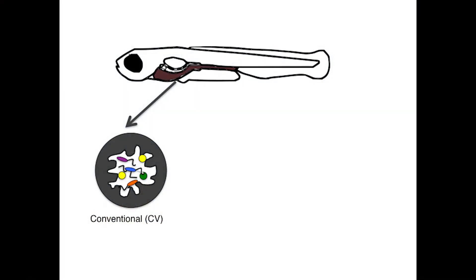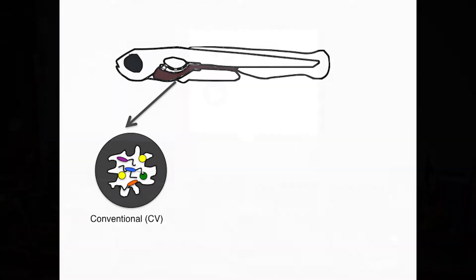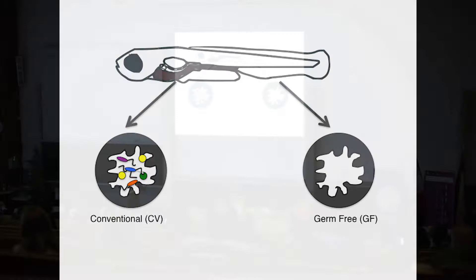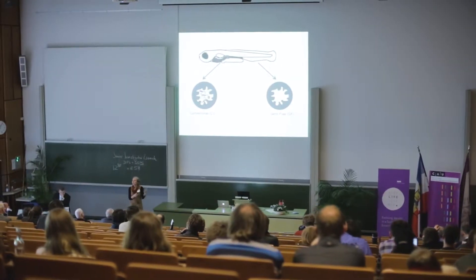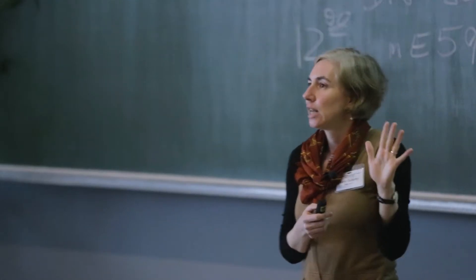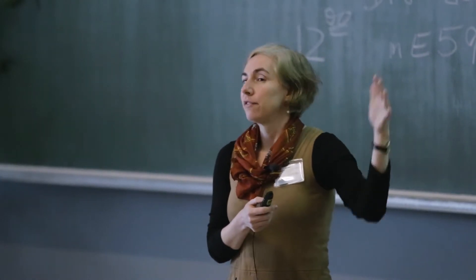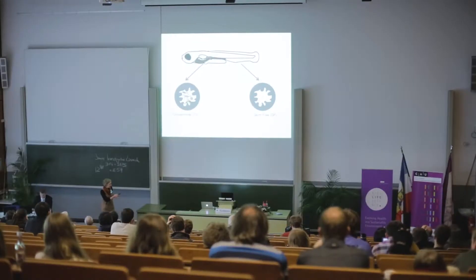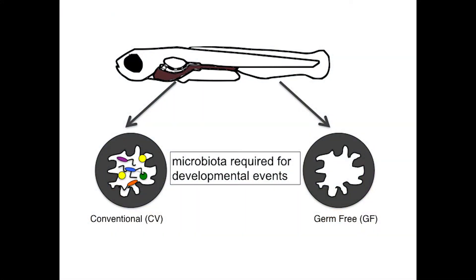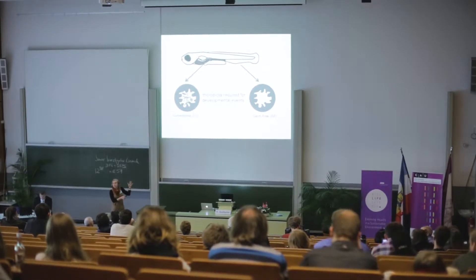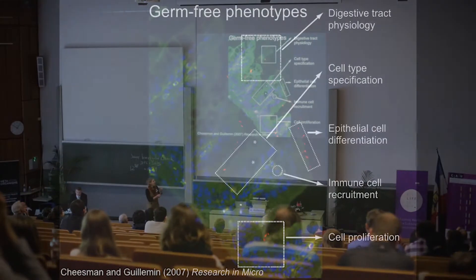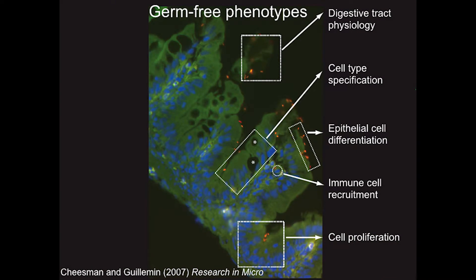We've been very interested in asking how the presence of these microbes can influence developmental events in this time period. A lot of what we think about is comparing the state of animals with their normal microbial community — the conventional state — to the germ-free state. This is very similar to thinking about the genetic basis for development: just as people analyze the phenotype of a genetic mutant to infer a requirement for that gene in a normal developmental process, similarly we can infer functions of the microbiota in development if we identify a developmental deficit in the germ-free state compared to the conventional state.